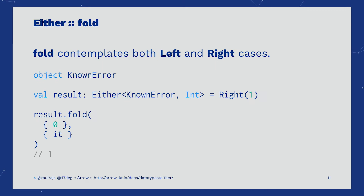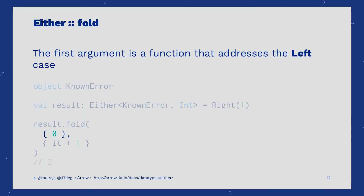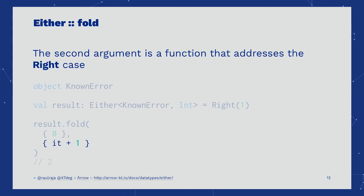An easier way to deal with this case is using fold. Fold allows us to pass two functions. The first function addresses the left case — here, we are saying that if we find a known error, we should return zero. The second argument is a function that addresses the right case — here, we have the chance to transform the inner contents of right.